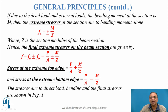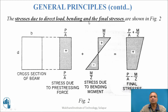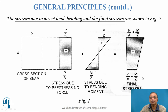The stress at the top fiber is P/A + M/Z, and the stress at the bottom fiber is P/A − M/Z. The stress at the top (P/A + M/Z) must be less than the permissible compressive stress of concrete, and the stress at the bottom (P/A − M/Z) must be greater than or equal to zero — meaning there is no tension. Therefore, the entire concrete section carries the load, whereas in RCC only about 50% of the section is effective.